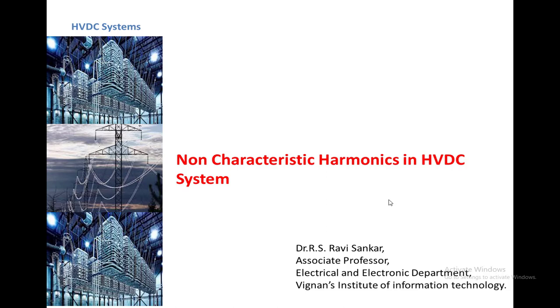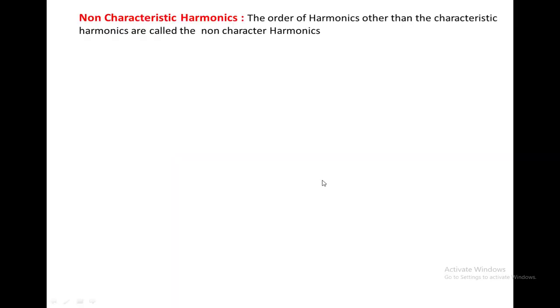Welcome to the class on non-characteristic harmonics in an HVDC system. In the last class we discussed characteristic harmonics in HVDC. Now we are going to see how non-characteristic harmonics are generated. The order of harmonics other than the characteristic harmonics are called non-characteristic harmonics, and these are generated in HVDC systems on both the AC side as well as the DC side.